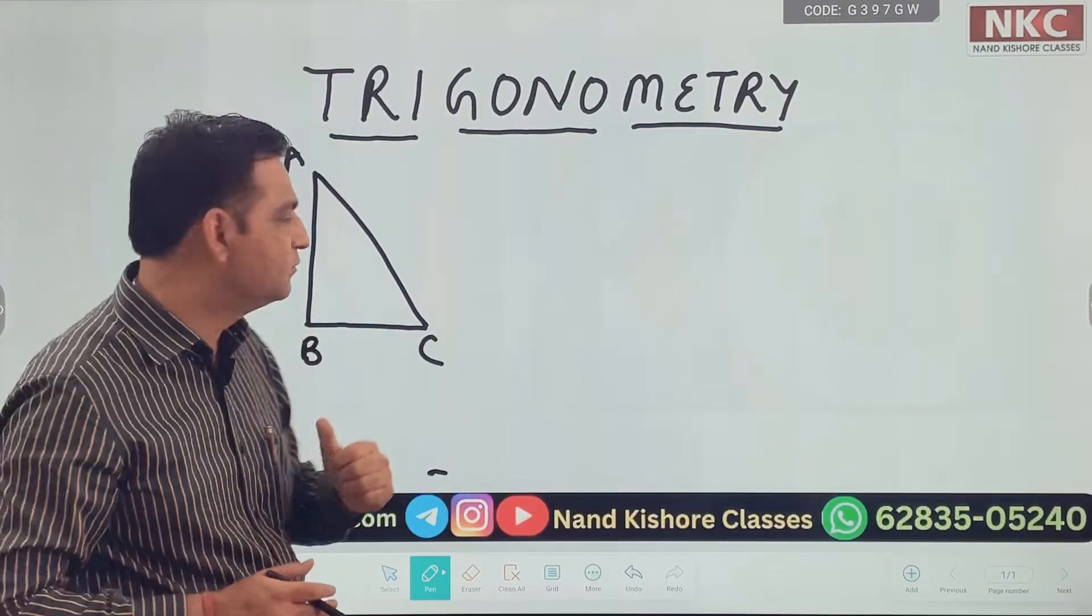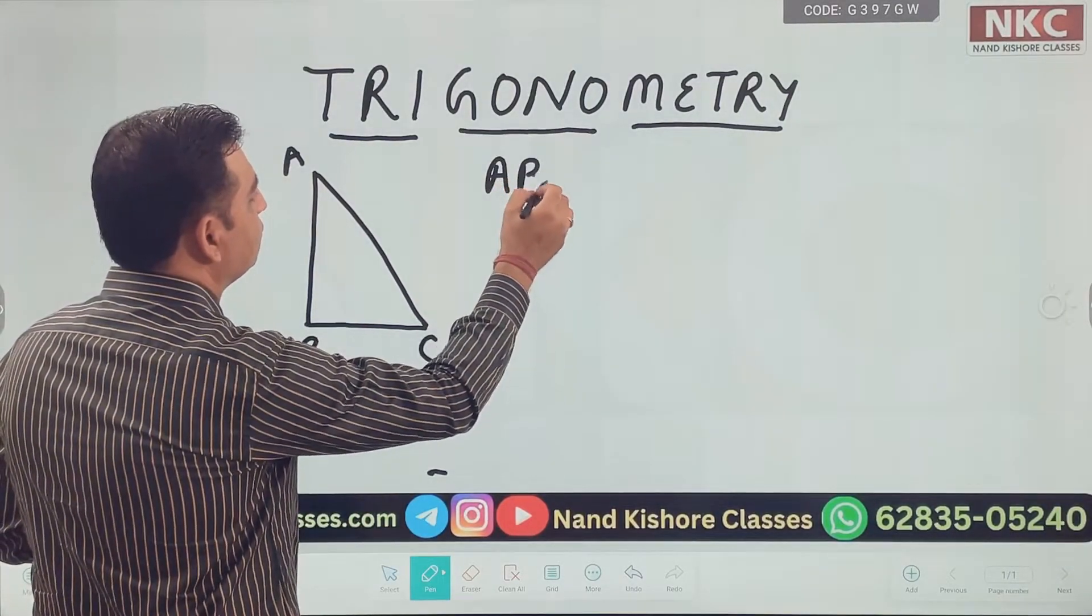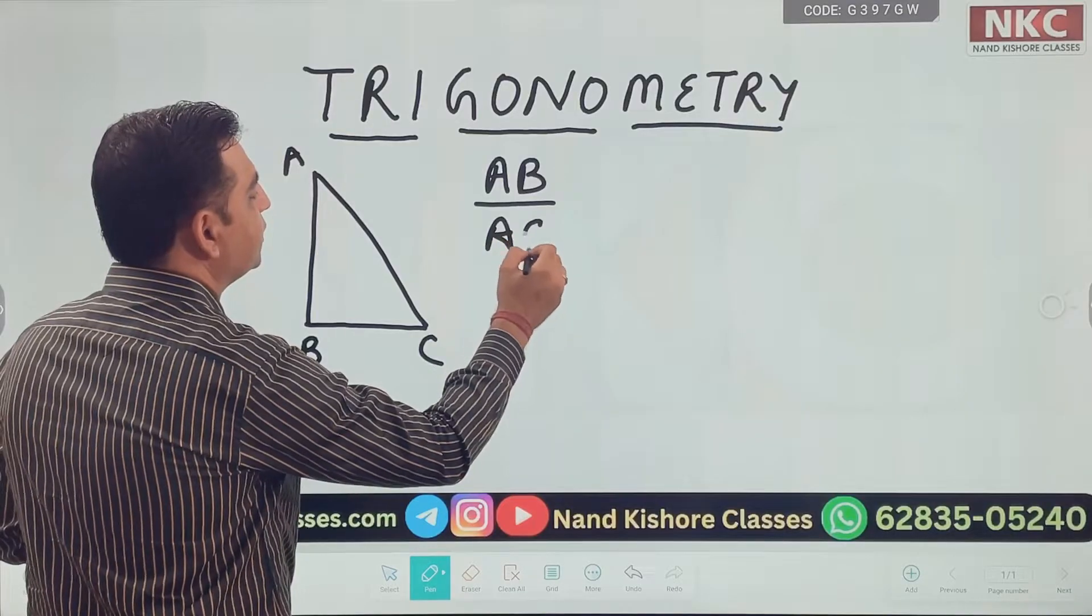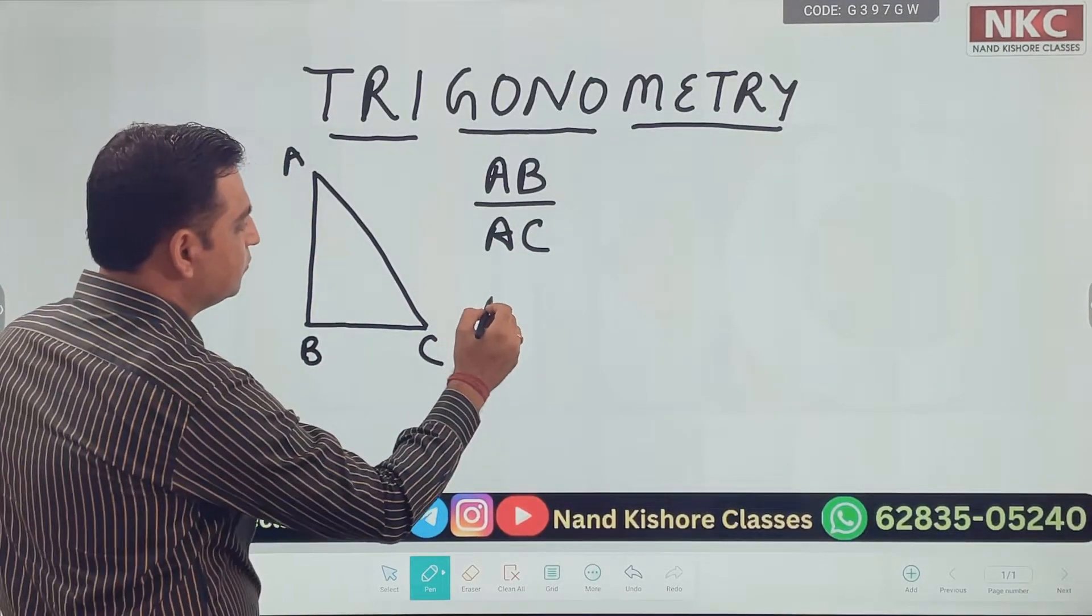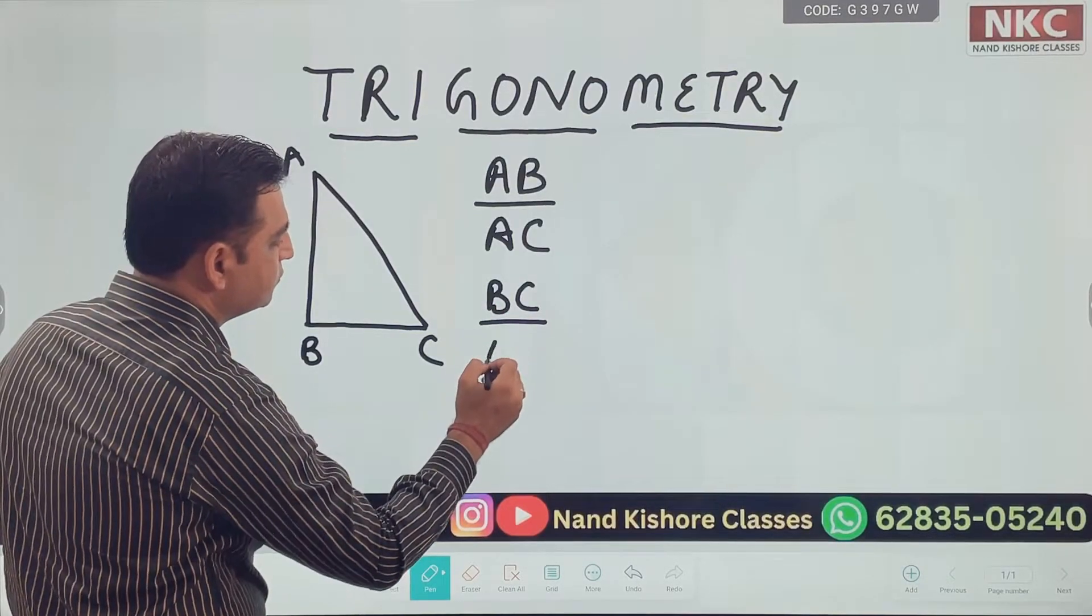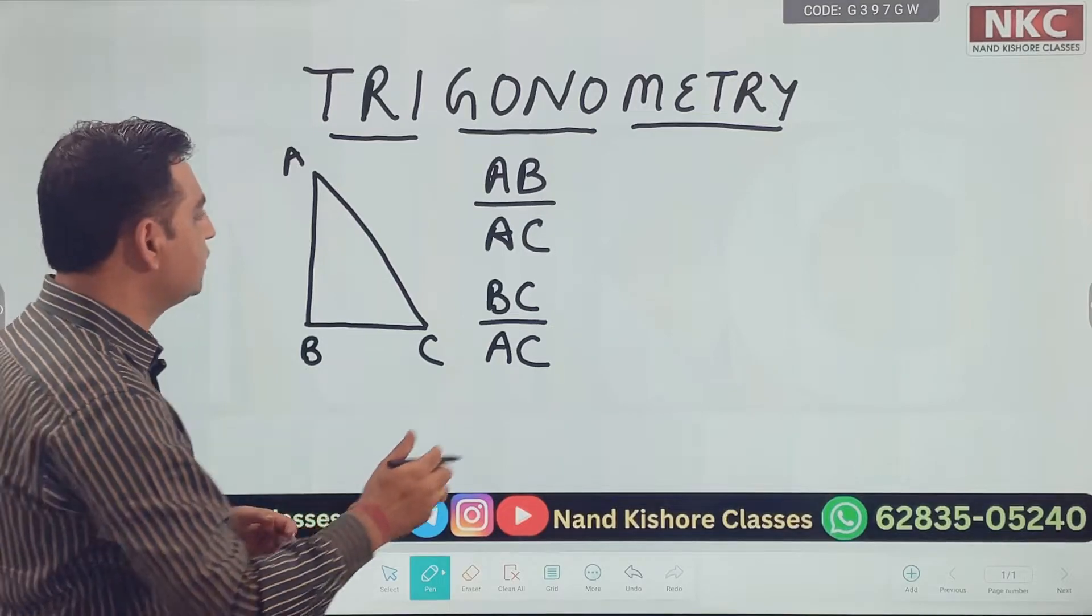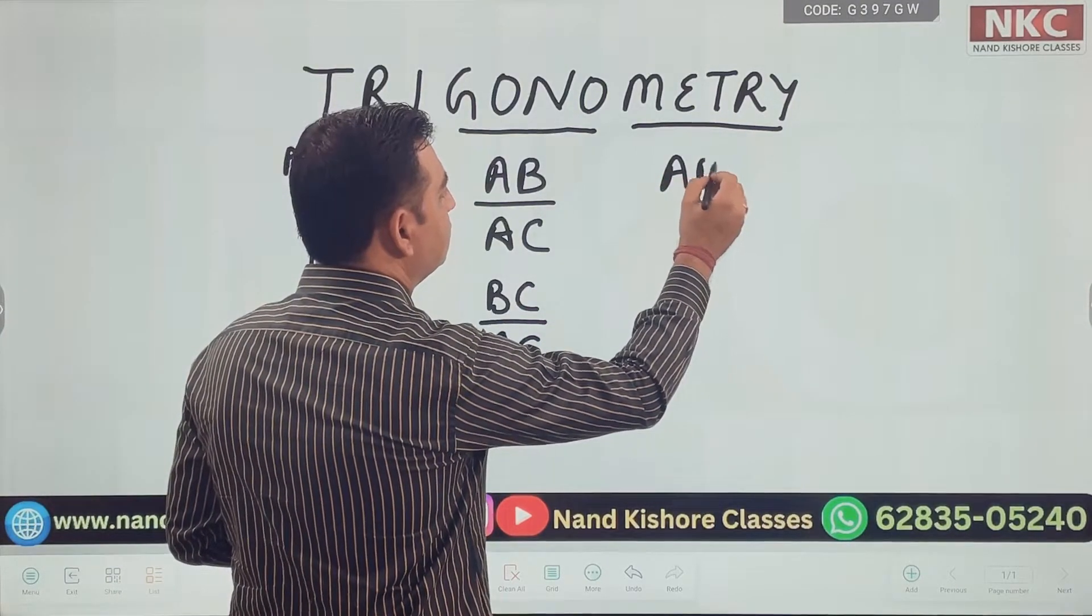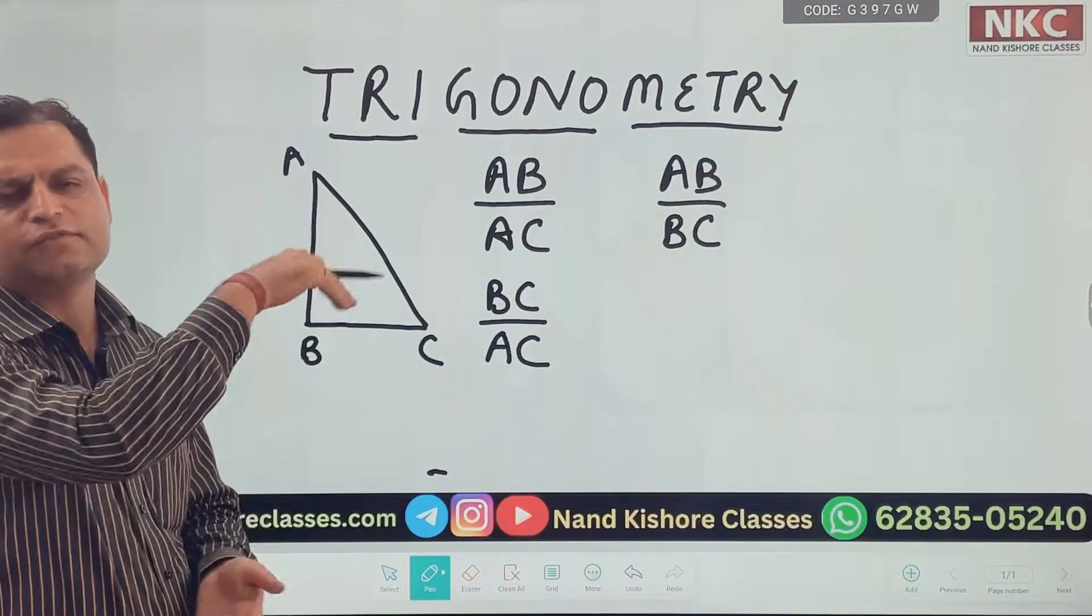Now, what's the meaning of division of sides? There are multiple options I am having. You can say, sir, we can divide AB by AC. Yes, we can do it. We can divide BC by AC. There are different ways of doing it. We can divide AB by BC and we can do reverse of them as well. Reverse means reciprocals.